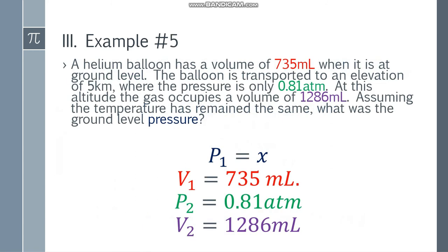Example number 5: A helium balloon has a volume of 735 ml when it is at ground level. The balloon is transported to an elevation of 5 kilometers where the pressure is only 0.81 atm. At this altitude, the gas occupies a volume of 1286 ml assuming the temperature has remained the same. What was the ground level pressure? P1 is equal to X, V1 is 735 ml.